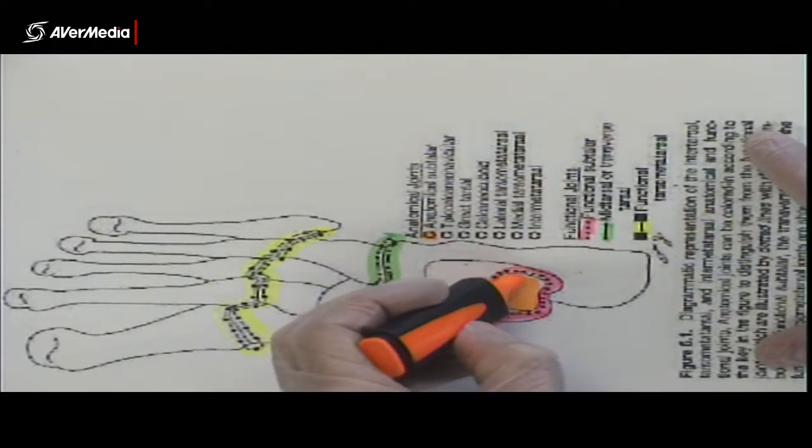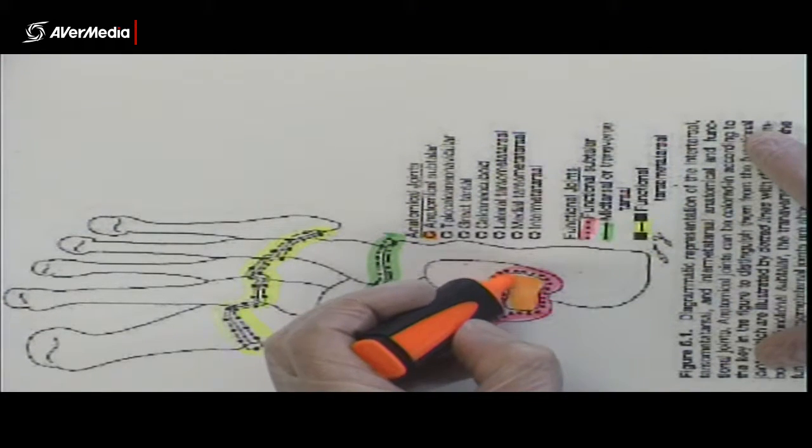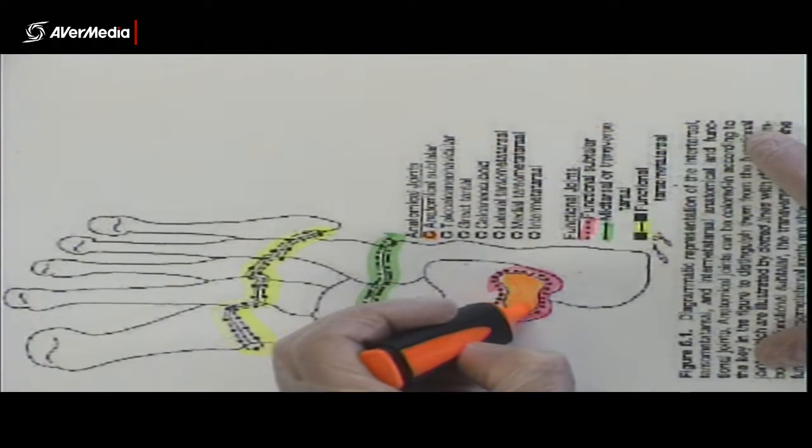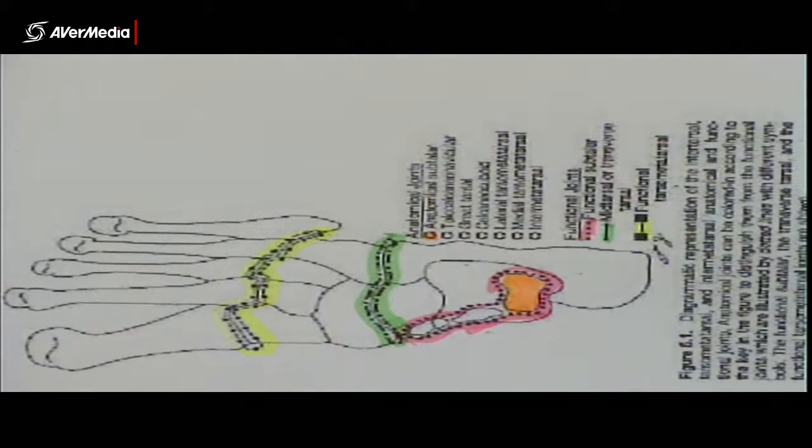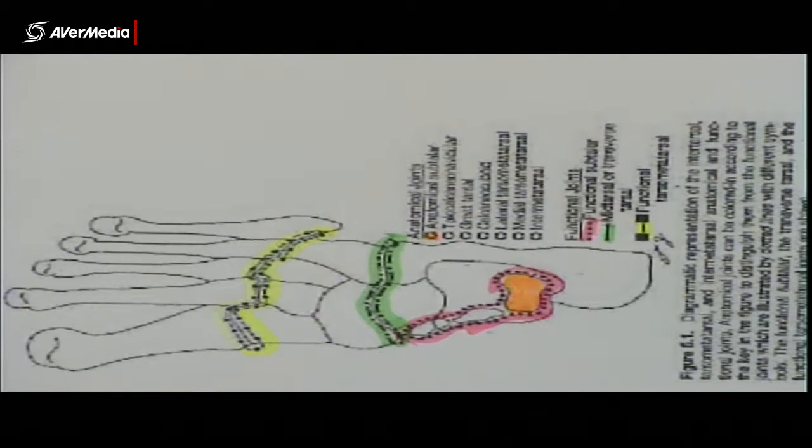So there's one facet on the talus, one on the calcaneus. They're the posterior articular facet on each bone. That's the anatomical subtalar joint. So there's one anatomical joint there and that's it.